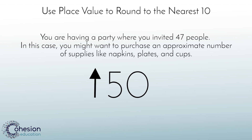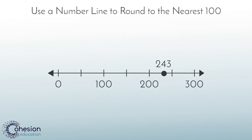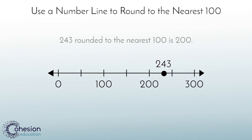Similarly, when asked to round to the nearest hundred, students may also see a number line. Point out to students that 243 is closer to 200, so 243 would round down to 200.